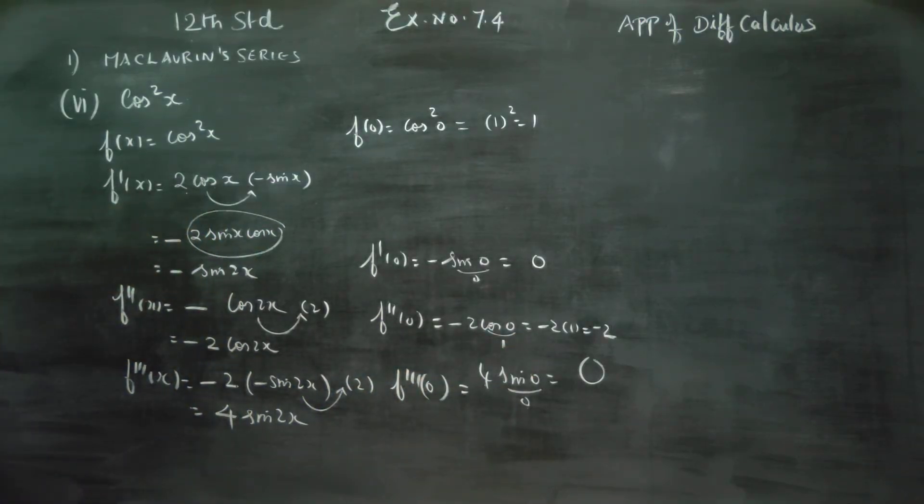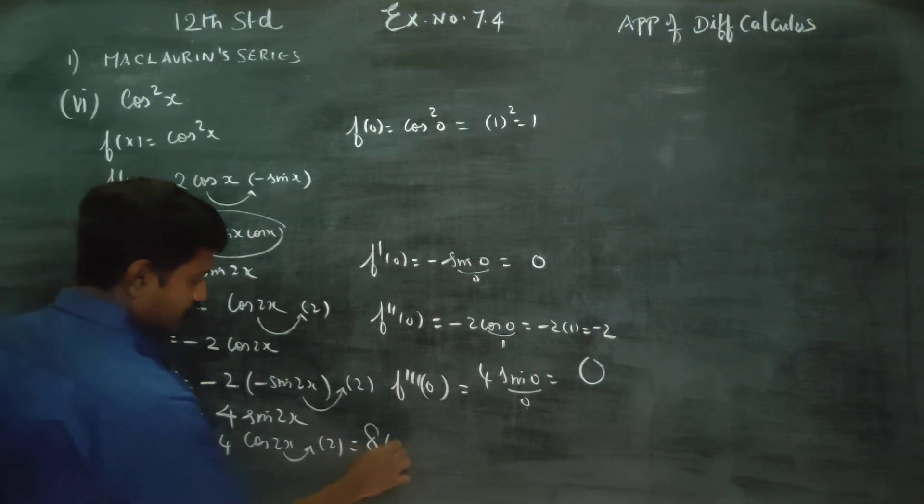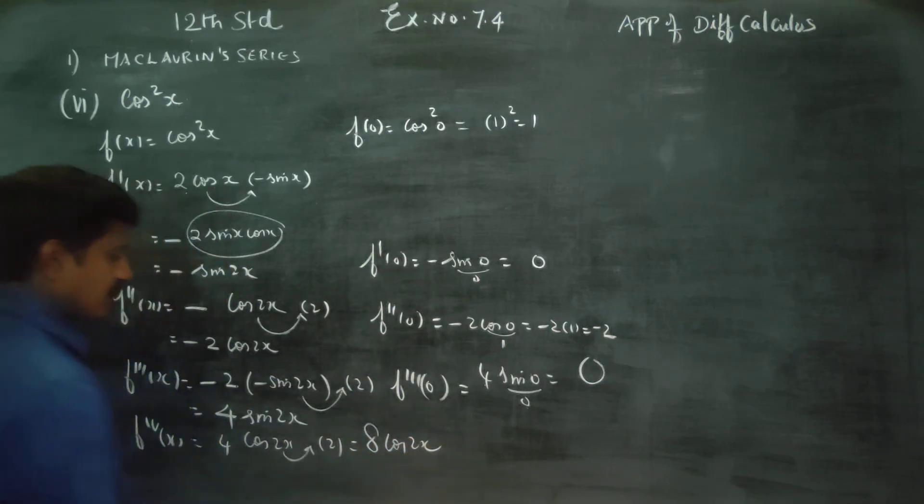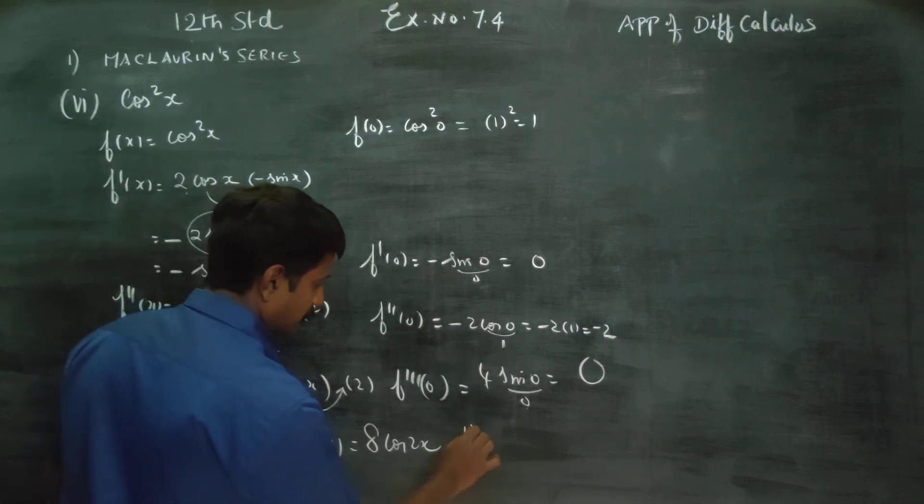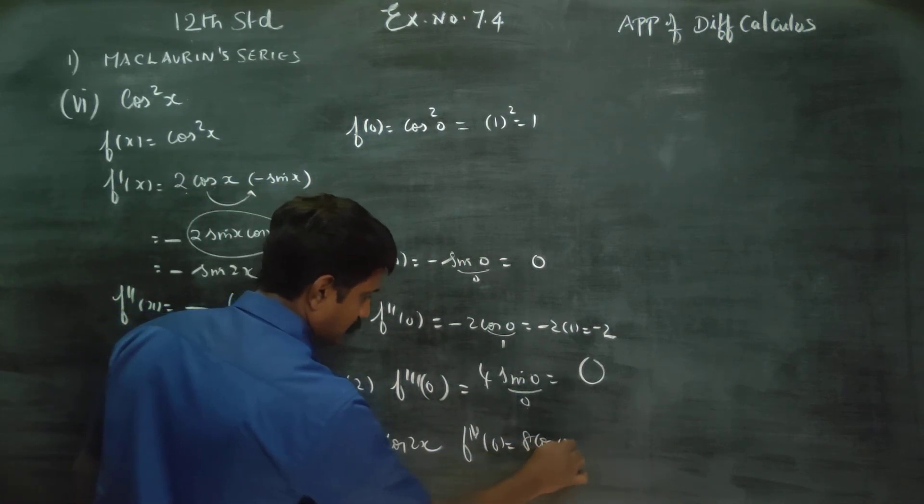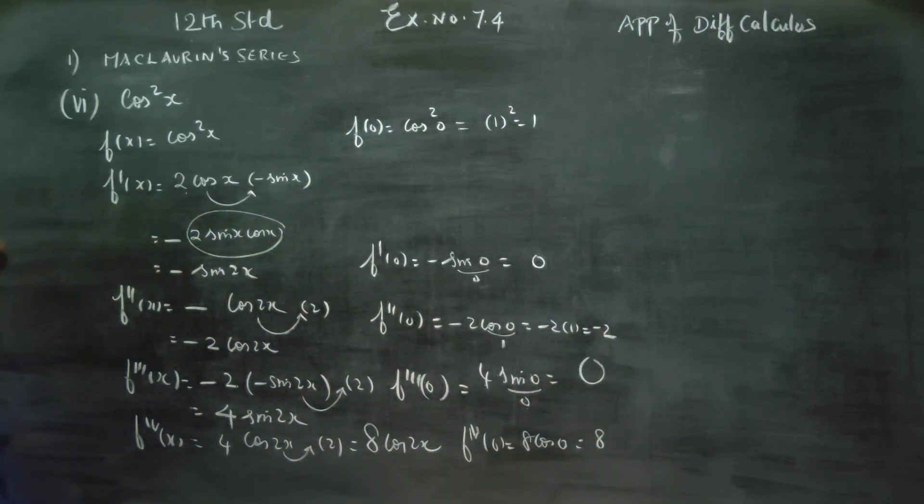Fourth differentiation: sin differentiate gives cos 2x, chain rule 2x gives 2. Your answer will be 8 cos 2x. f4 of 0 is 8 cos 0, cos 0 is 1, answer is 8.